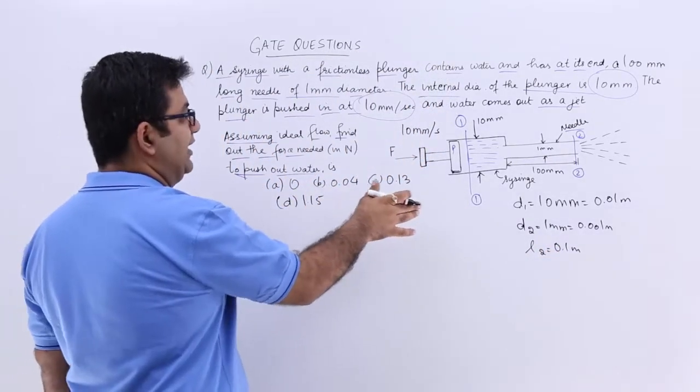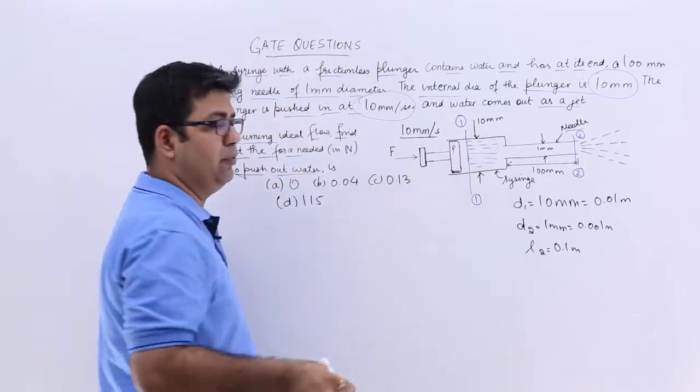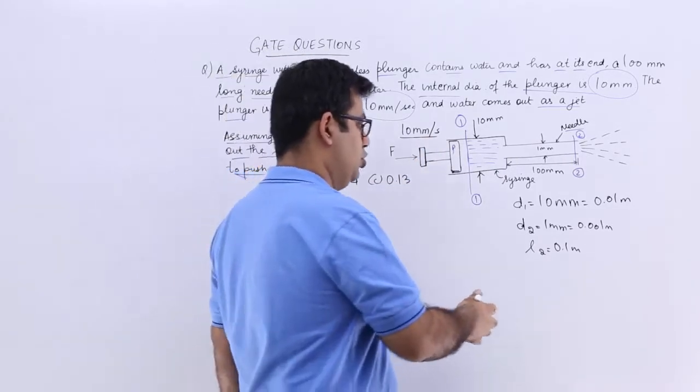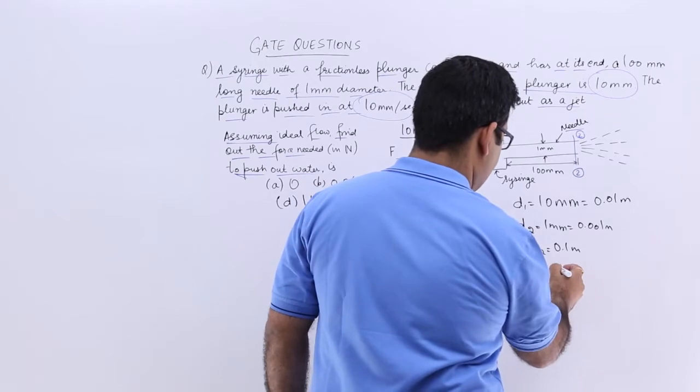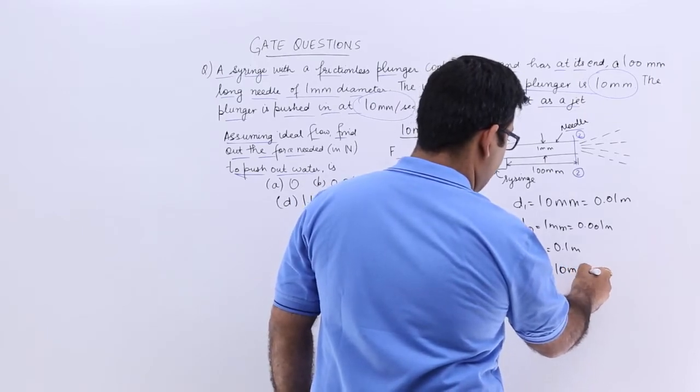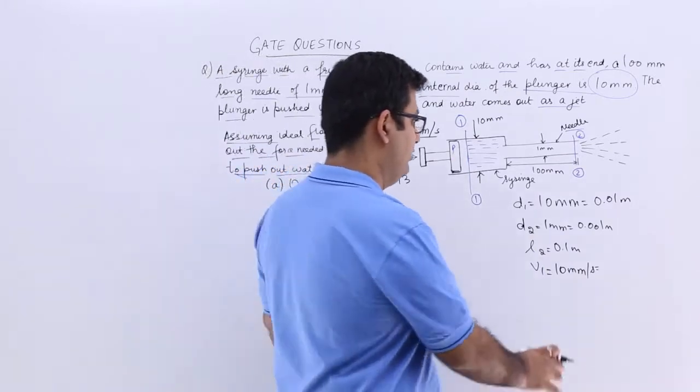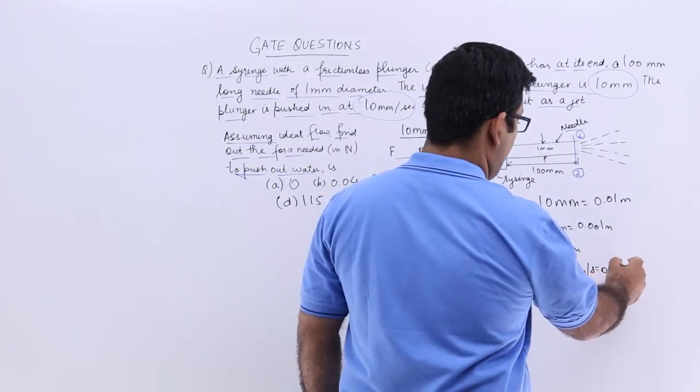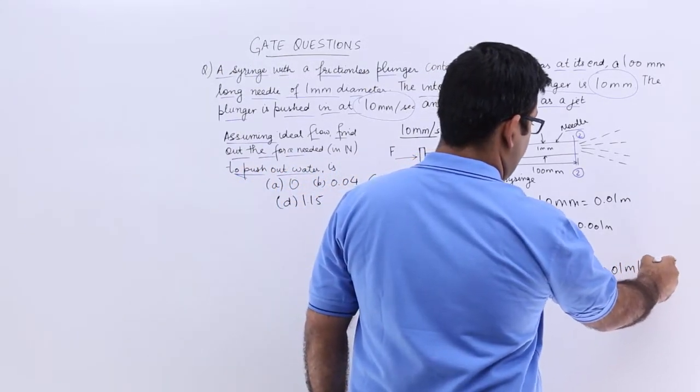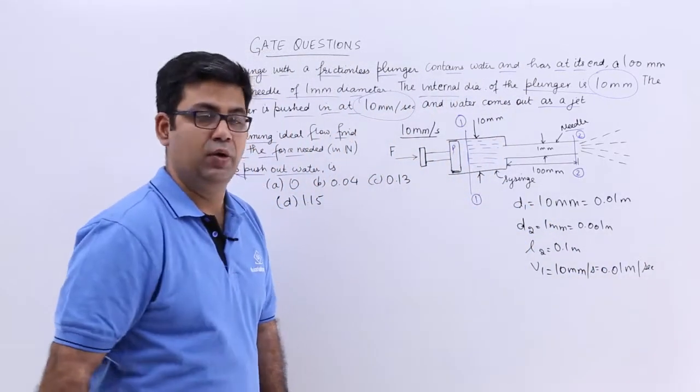The velocity at section 1 is the rate at which the plunger is pushing the water. So I would say V1 is 10 mm per second. If in meters I have to calculate, this would be 0.01 meters per second.